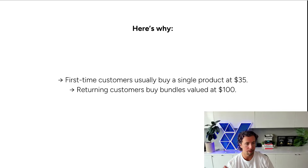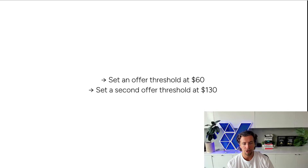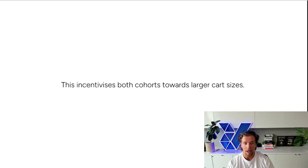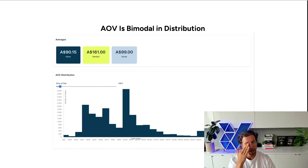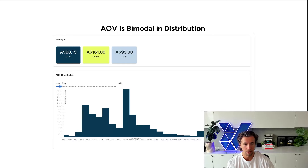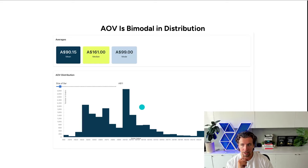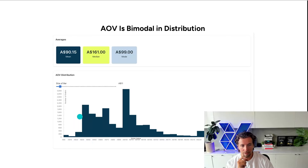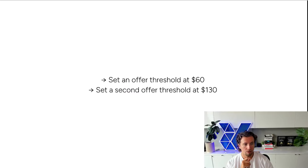In this particular brand, first-time customers usually only spend $35, but returning customers will always come back and buy bundles valued at $100 and above. So in this instance, we'd want to be setting two offer thresholds — one at $60 and one at $130 — to incentivize both cohorts to shift upwards to larger cart sizes. Where people make a mistake is they look at the back end of Shopify, which says their AOV is $90.15, and then they set free shipping at $100. But it makes no sense because not many people are actually purchasing $90 orders — and these are the people we'd be trying to incentivize up to $100. Instead, look at the distribution and set thresholds to move the $100 cohort up to $120–$130, and the $30–$40 cohort up into the $60–$70 range.